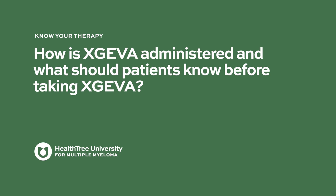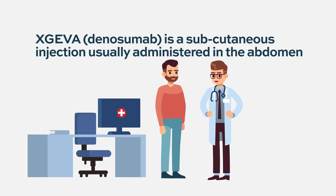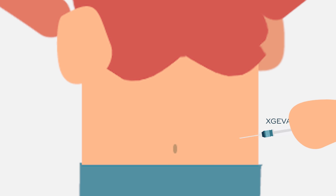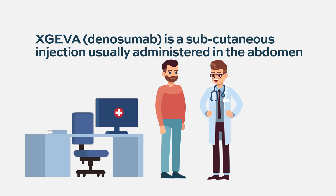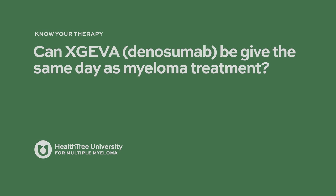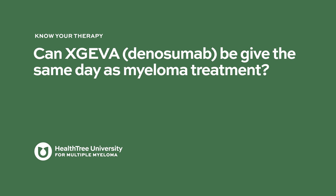How is Xgeva administered, and what should patients know before taking it? Denosumab is an injection administered usually in the abdomen, similar to how other myeloma medications such as bortezomib (Velcade) or daratumumab (Darzalex) are administered. Denosumab can be given on the same day as your myeloma treatment.